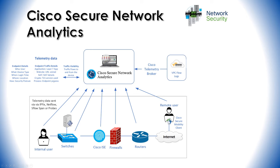In the middle there are some more Layer 7 type details — endpoint traffic details. So the Layer 7 application, website URL visited, NAT details, crypto such as the TLS version used, and the process running on the endpoint.